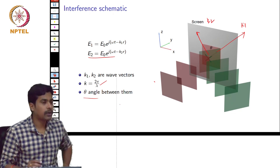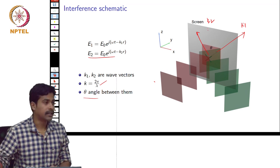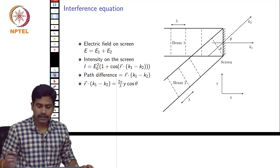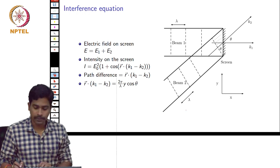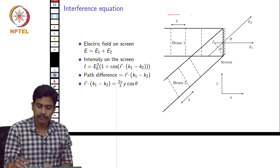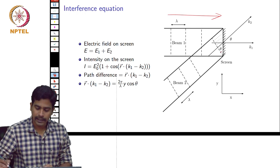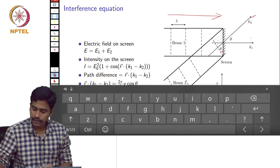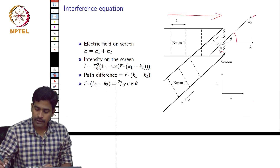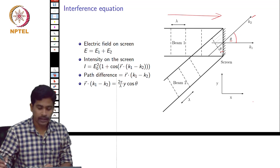Given these parameters, we want to know what the interference pattern is going to look like on this screen. This is just the top view of the beams from the figure we have seen in the previous slide. This beam is travelling parallel to the screen and the other is going at an angle theta. These 2 are the wave vectors, and the angle between these 2 beams is given by angle theta. Using a little bit of geometry, you will also find out this angle is also theta.